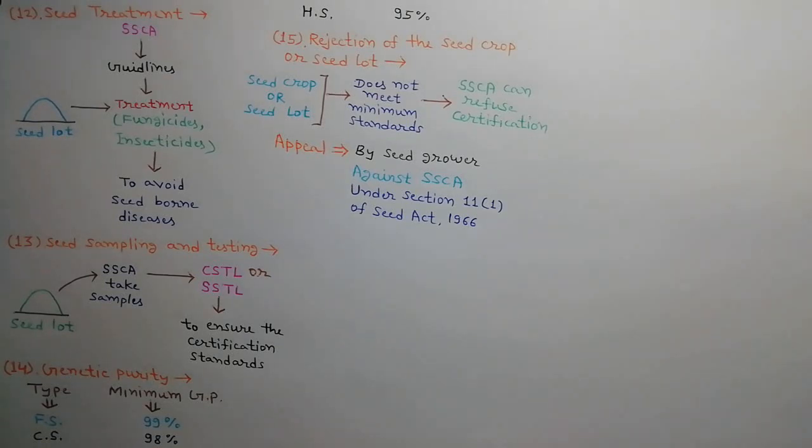The certification agency has the authority to refuse certification of any seed field or seed lot that does not meet the minimum standards prescribed for the crop. Under Section 11-1 of the Seed Act, 1966, the seed grower may appeal against the decision of the certification agency to the affiliate authority, who will communicate his decision to the seed grower.